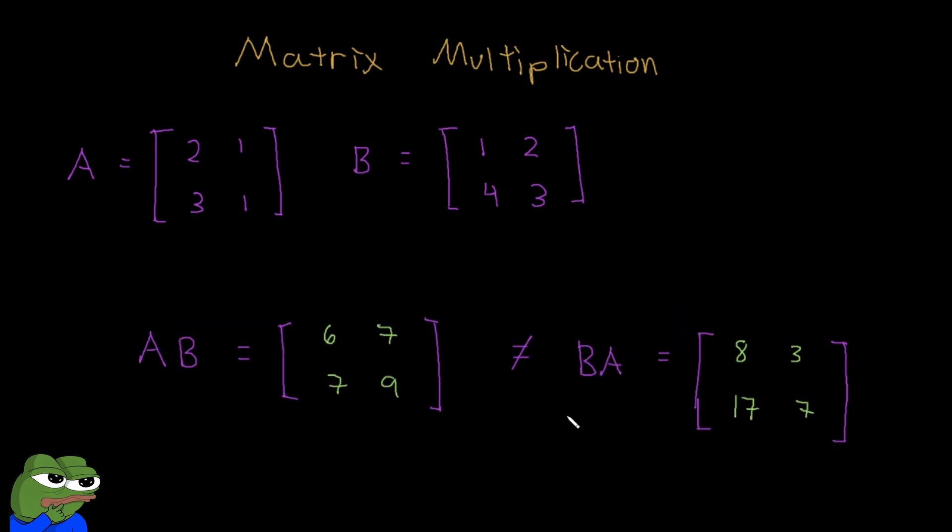And finally, one last thing to note is that multiplication for matrices can't be switched around. So for example, if you do two times five, that would give you 10. And if you do five times two, that would also give you 10. But it's not always true for matrices. So if you say A times B gives you this matrix, but you'll see that given these same matrices, if you do B times A, it would actually give you this different matrix. Hopefully, now you understand how to do matrix multiplication.